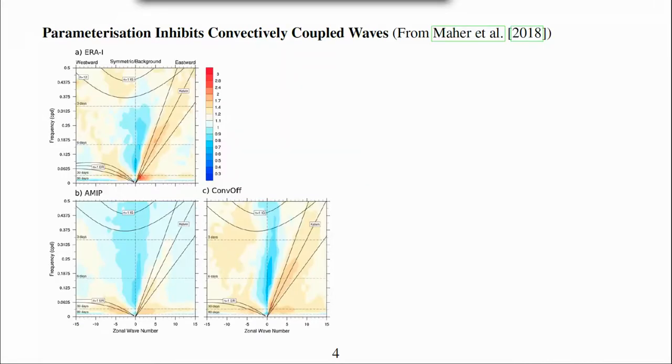However, not all aspects of convection are more accurate with a parameterisation than without. These wave number frequency plots from Maher et al show the power of convectively coupled Kelvin, Rossby and mixed Rossby gravity waves. The simulation with convection parameterisation have insufficiently powerful convectively coupled waves and this is alleviated when the convection parameterisation is switched off.